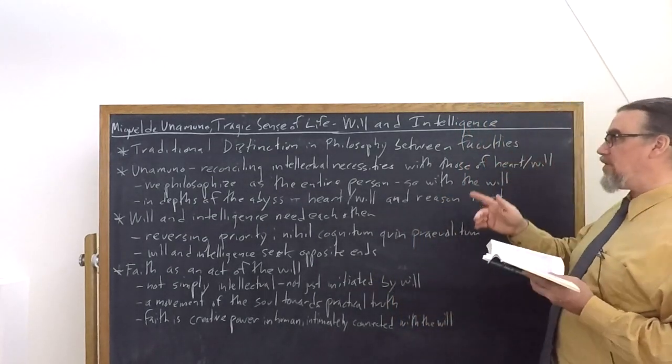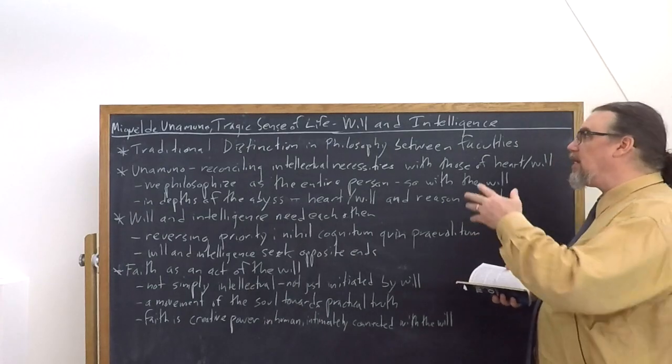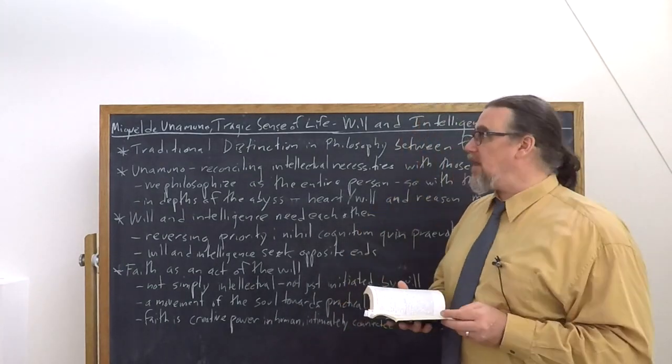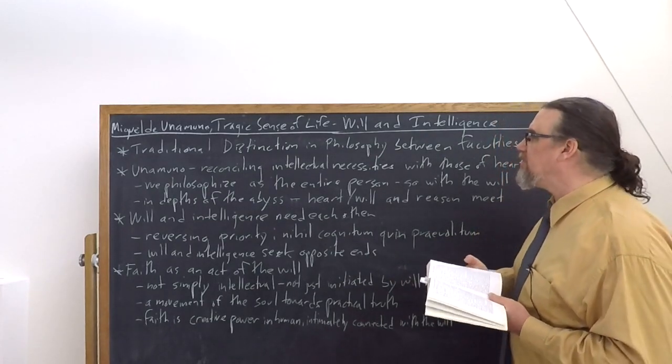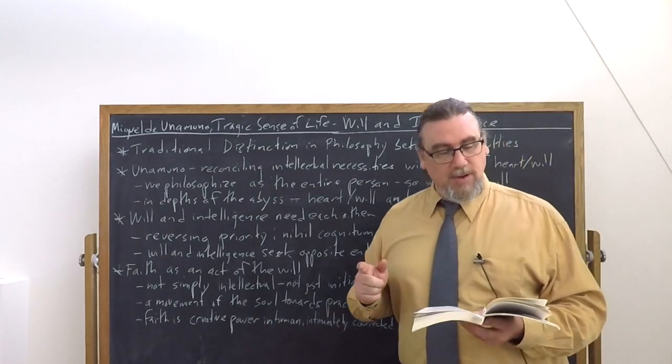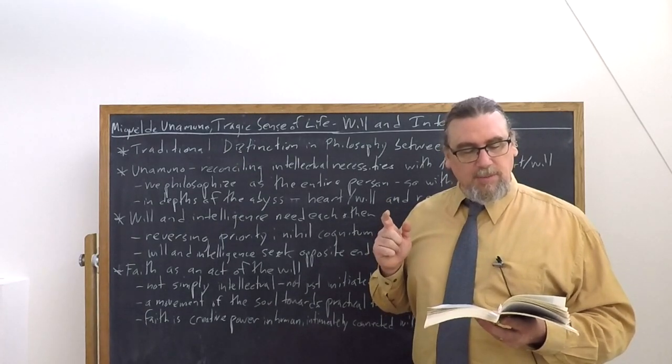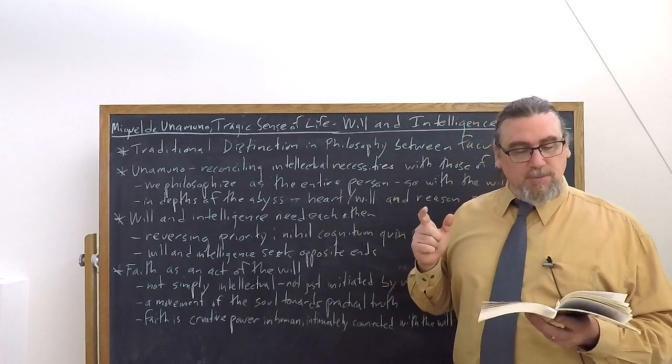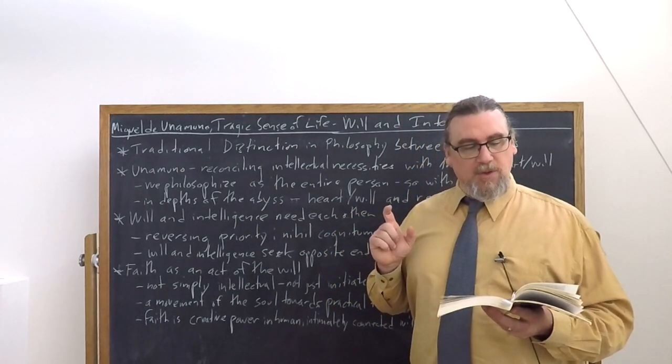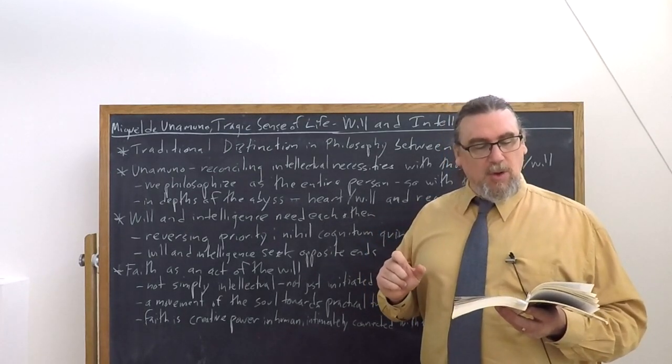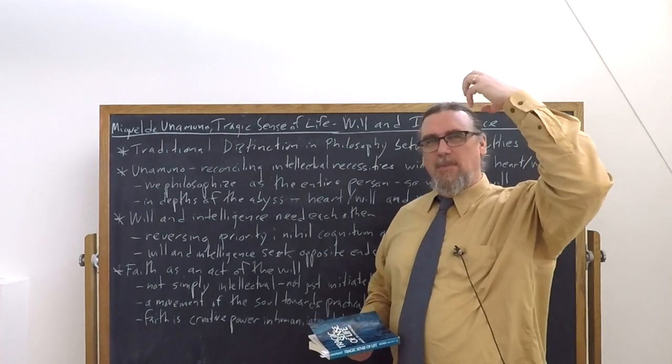Philosophy is going to have to involve both recognizing and then reconciling intellectual necessities with those that are imposed on us by our entire affective side. He tells us that philosophy is a product of the humanity of each philosopher. Each philosopher is a person of flesh and bone who addresses himself or herself to other people of flesh and bone like themselves. They philosophize not with the reason only, but with the will, with the feelings, with the flesh and with the bones, with the whole soul and the whole body. It is the human being who philosophizes, not just one part of the human being.